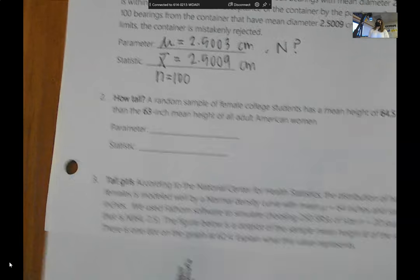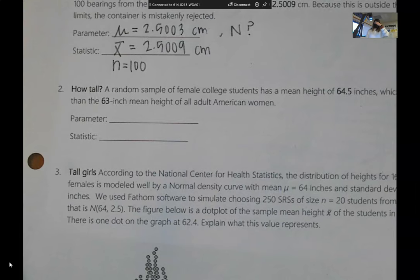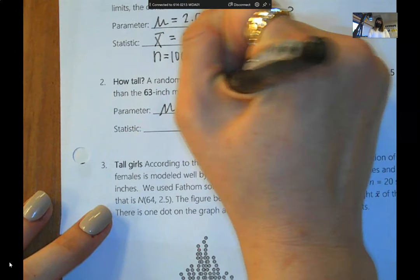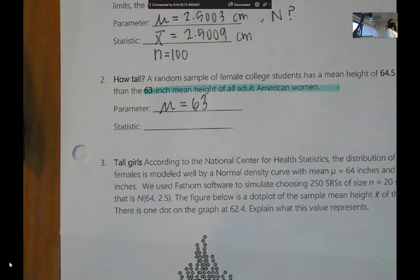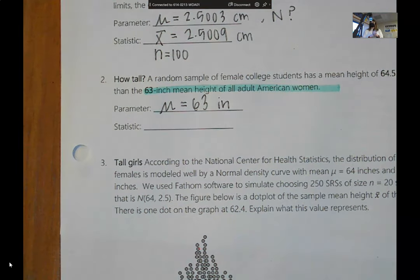This one is similar. A random sample of college students has a mean height of 64.5, which is greater than the 63-inch mean height of all adult American women. So which one's mu, 64 or 63? 63. Your population is all adult American women, and they're telling you that that average height is 63. The symbols do matter. You need to know the difference between mu and x bar.